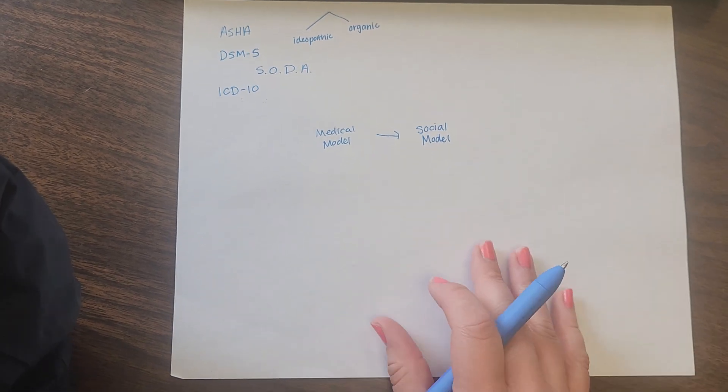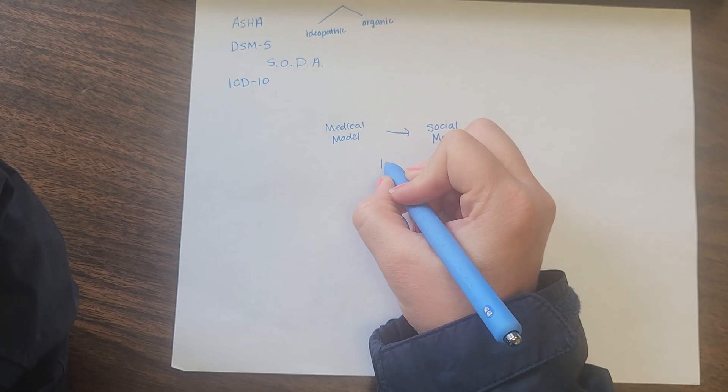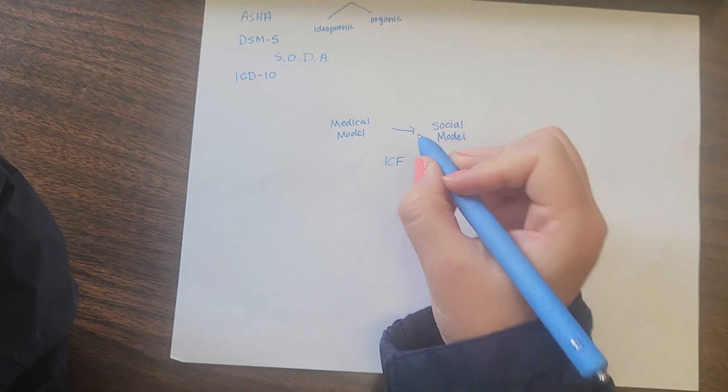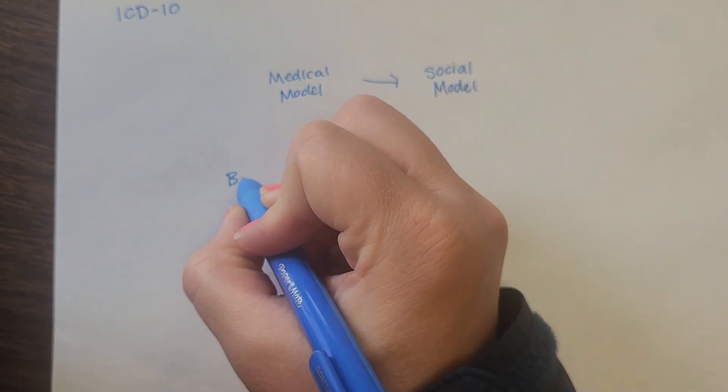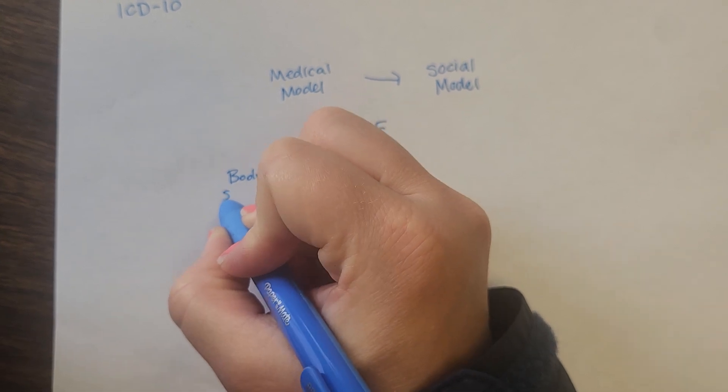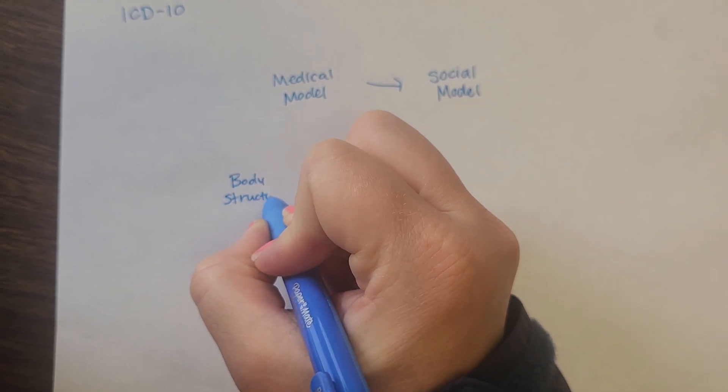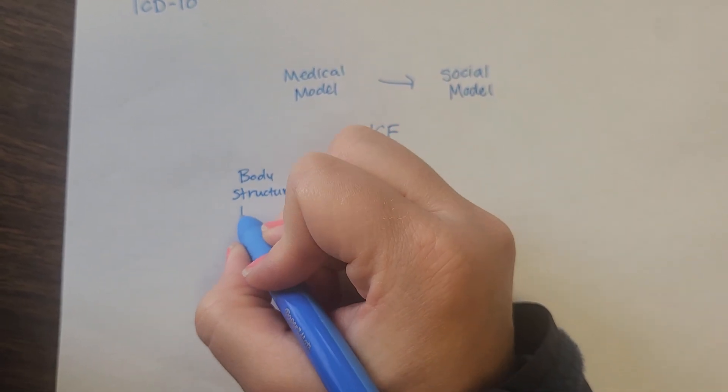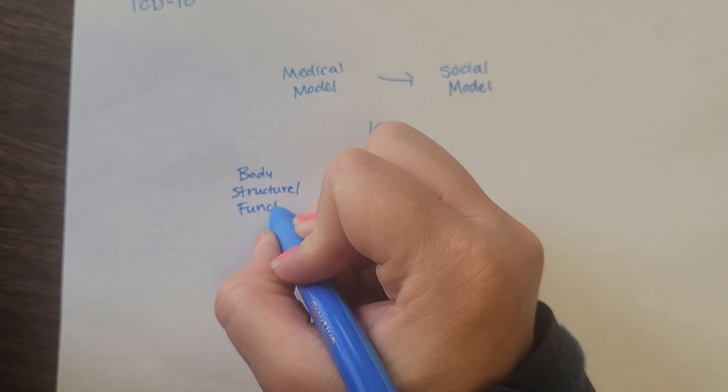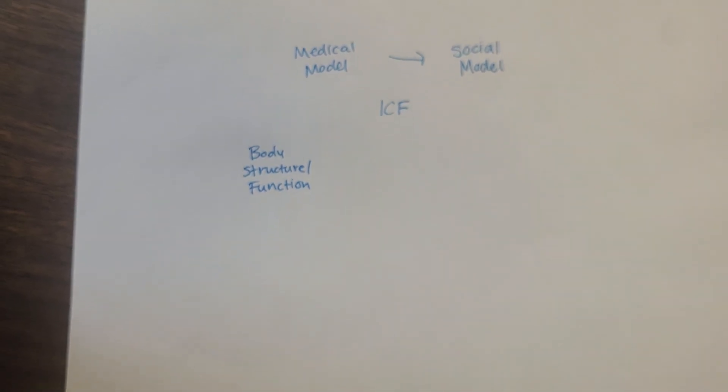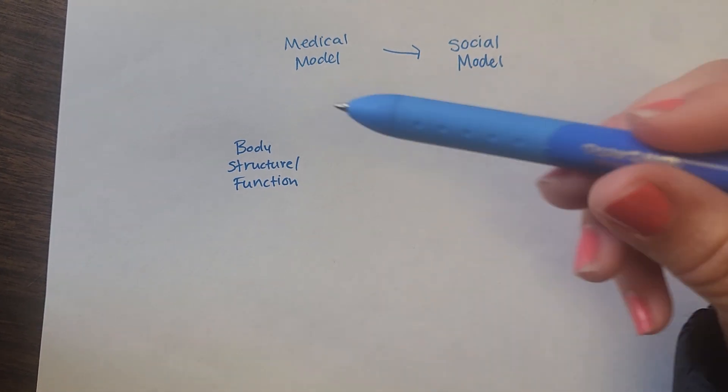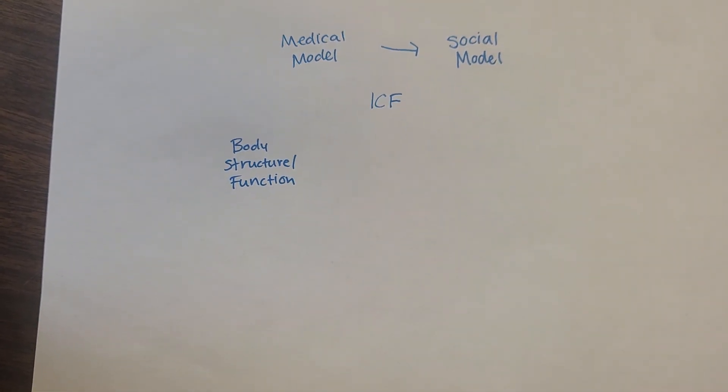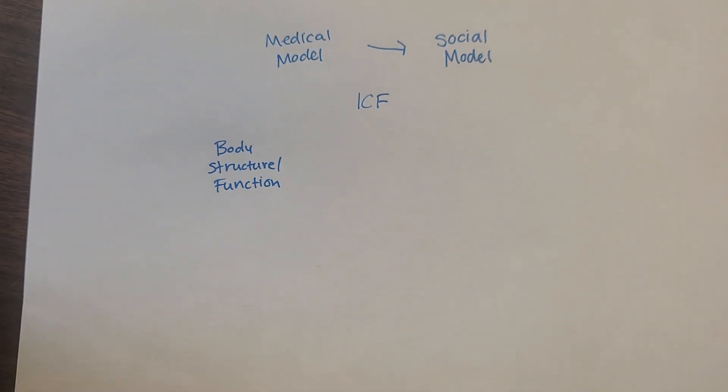So if we draw out this ICF model, the first thing that it's going to look at is impairments in body structure and body function. So we're going to use more of a medical type disorder to talk about this, but let's say you had diabetes. The body structure that's impaired is your pancreas and it's not producing insulin like it should.